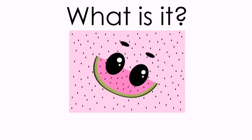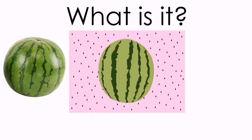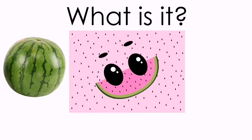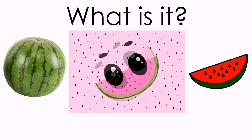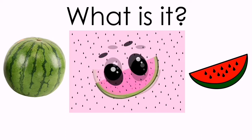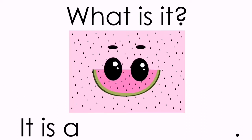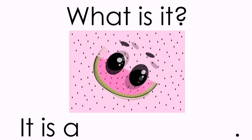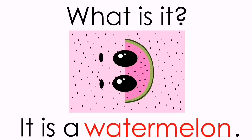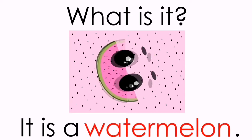The next one. What is it? It is very round and big. It is sweet. It has a lot of black seeds. It is red inside and green outside. You're right again! It is a watermelon. Again, it is a watermelon.